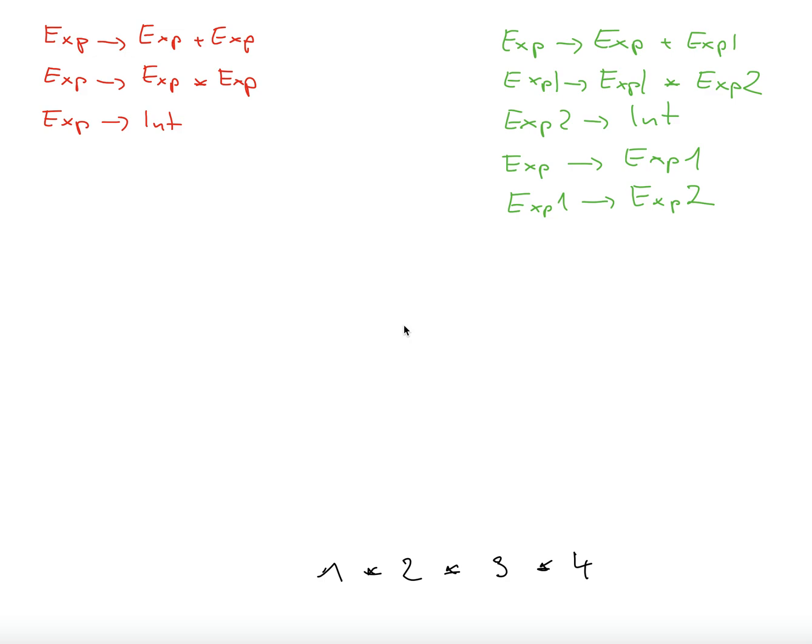On the right-hand side, the green grammar, it's a variation which is more complicated because it introduces different levels in order to model precedence.